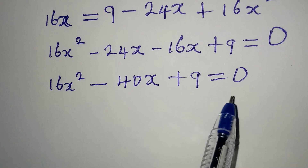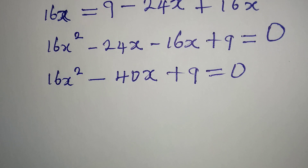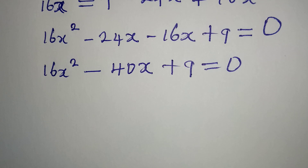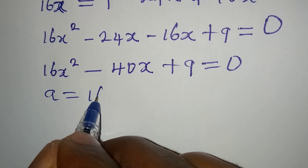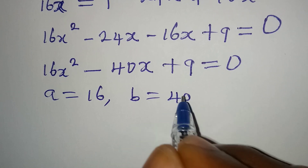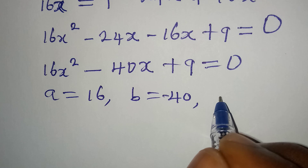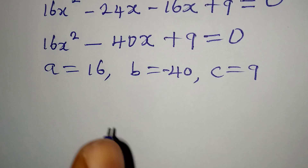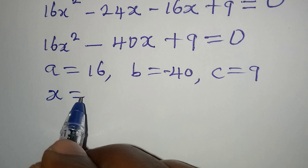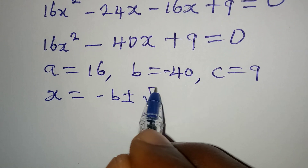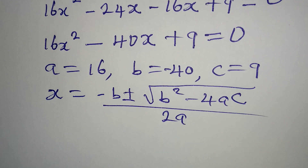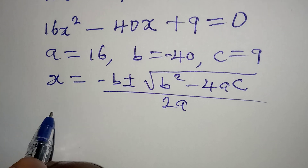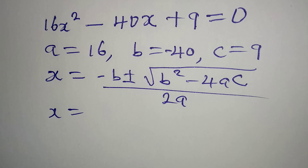As I've always said, with big numbers like this, 16x squared, it would be kind of difficult to factorize, so use the formula method. Our a is 16, b is negative 40, and c is positive 9. The formula is x equals negative b plus or minus square root of b squared minus 4ac, all over 2a.